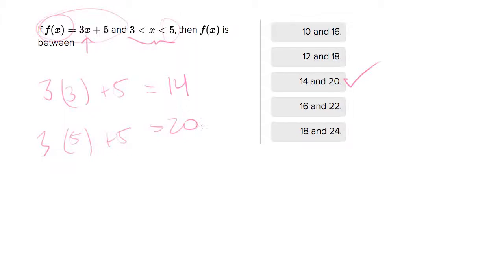What's tricky though is making sure that you haven't missed something. So what this function looks like, 3x plus 5, if we plot it, it looks something like this. It's a line.